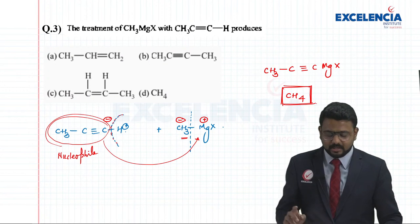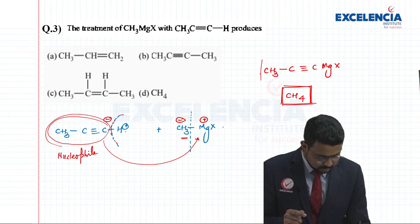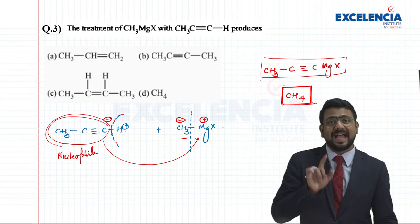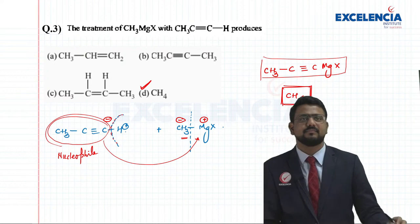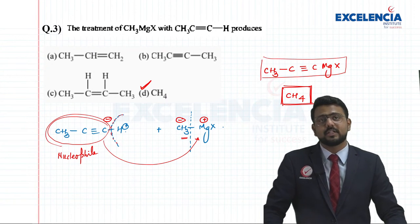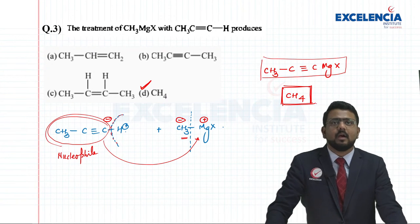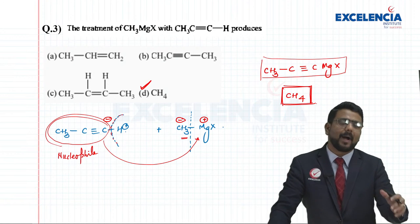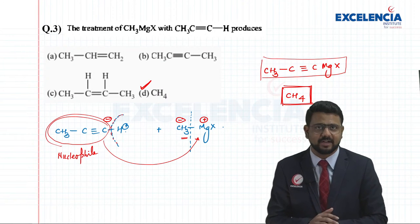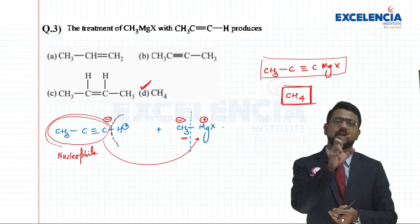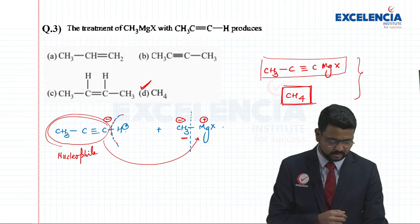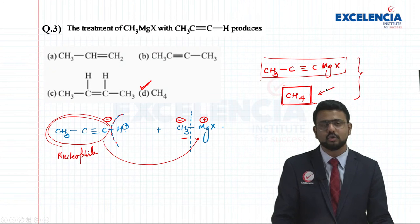So obviously none of the other options match, but methane is indeed formed. That's why option D is your correct answer. Because propyne is a terminal alkyne, the propynyl ion acts as a nucleophile attacking the MgX part. Hence the two products formed are CH3C≡C-MgX and methane. Methane is given as the answer.